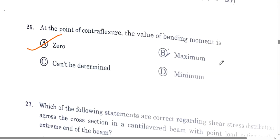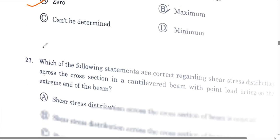Question number 26: at the point of contraflexure, the value of bending moment is? Contraflexure is basically the point where bending moment changes its sign. So at the point of contraflexure, the value of bending moment is zero. That option is the correct answer.